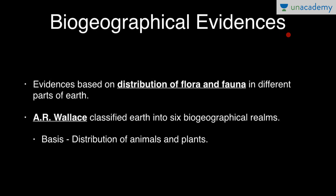Biogeography stands for the study of distribution of animals and plants in different parts of the earth. These are evidences based on distribution of flora and fauna in different parts of the earth. Flora stands for the group of plants present in a particular area, and fauna refers to the distribution of animals in a particular area. The evidences of evolution based on distribution of flora and fauna are referred to as biogeographical evidences of evolution.